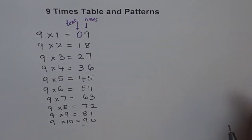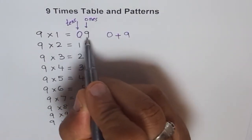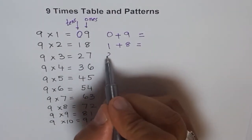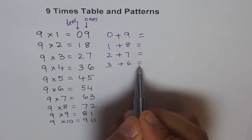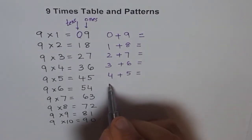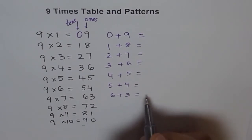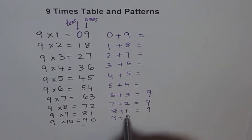Can you look for more patterns? Let's think about more patterns. What if you add the two digits? Add 0 and 9 — the two digits. If you add 1 and 8, what do you get? Try 2 plus 7. Then 3 plus 6. Is it the same as 4 plus 5? 5 plus 4 is 9. 6 plus 3 is also 9. 7 plus 2 — is it 9? Yes it is. 8 plus 1 is 9. And 9 plus 0 is also 9.